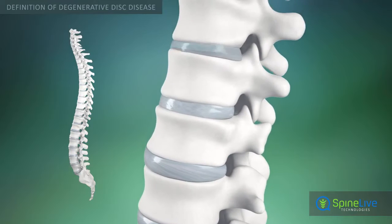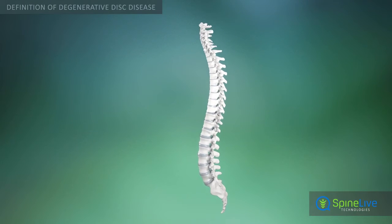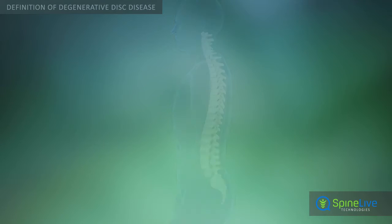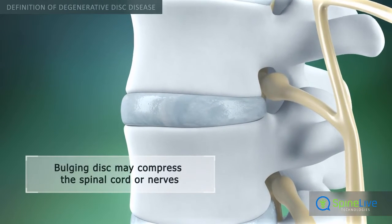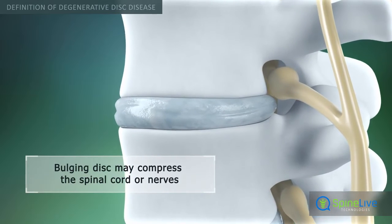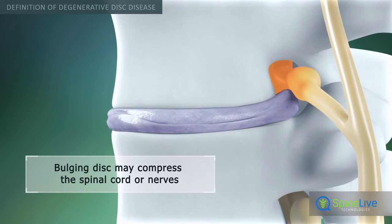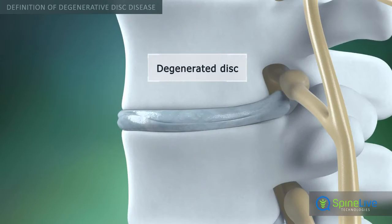Degenerative disc disease is a condition that occurs in the spine due to aging. It most often occurs in the lumbar area, but any of the spinal discs can be affected. Due to aging, discs dry out and become stiff. Tiny but painful tears can then develop in the outer rim. Pressure from the center of the disc then stretches the outer rim, creating a bulge. This may irritate or compress the spinal cord or nerves.